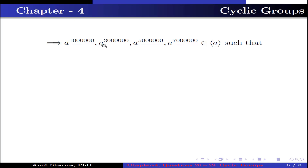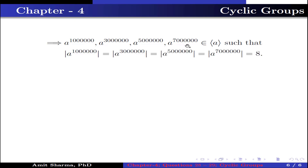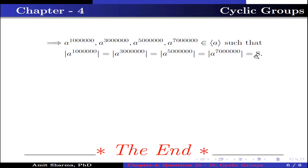This implies a to the power 100000, a to the power 300000, a to the power 500000, and a to the power 700000 belong to the group generated by a, such that their orders equal 8. Thank you very much for watching my video. If you like the content, please do like, share, and subscribe to my channel. If you have any query, comment me. Thank you very much.